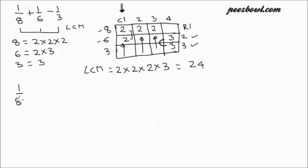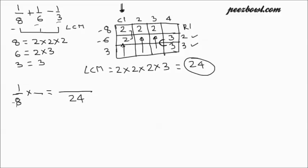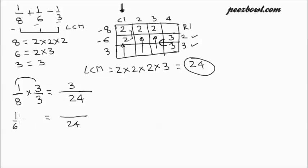Now we need to convert the denominator of all three fractions to 24, which is the LCM. For 1 upon 8, we multiply both numerator and denominator by 3, giving us 3 upon 24. For 1 upon 6, we multiply by 4, giving us 4 upon 24. For 1 upon 3, we multiply by 8 upon 8, giving us 8 upon 24.